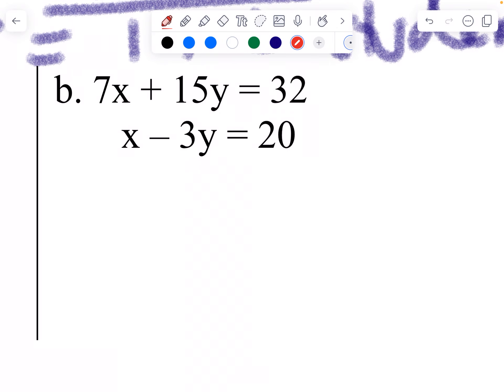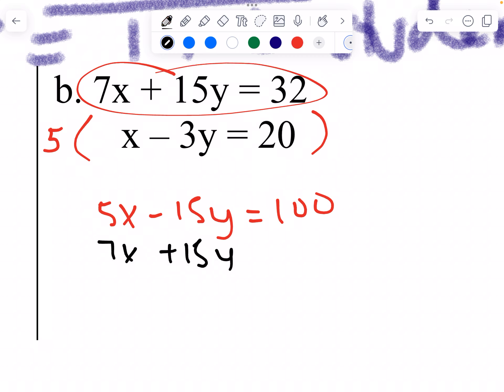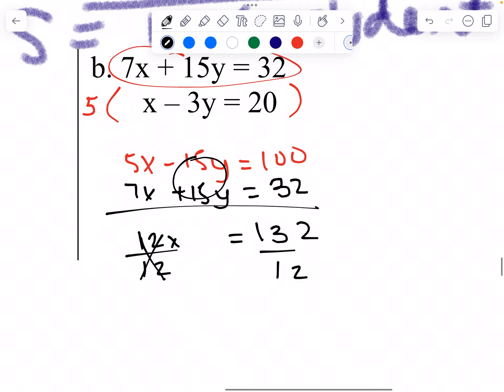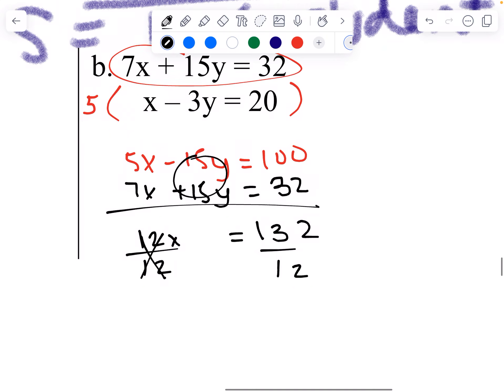I would multiply this by five. This I multiply by seven. I'd rather multiply by five. Five is easier for me. So I get x minus 15y equals to negative 100. And this stays the same. 7x plus 15y equals to 32. 12x equals to 132. Divide by 12. 132 divide by 12. Let's see if it can be divided evenly. No. 11. Yes. X is 11.